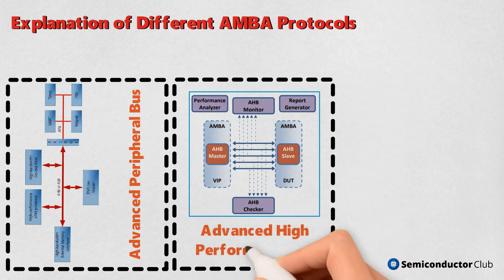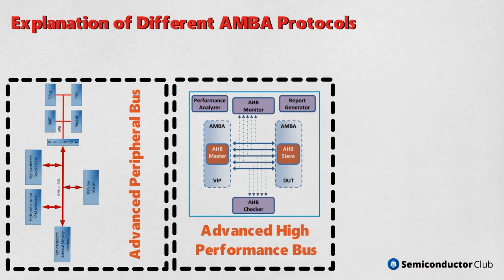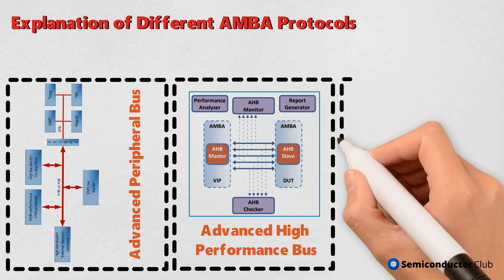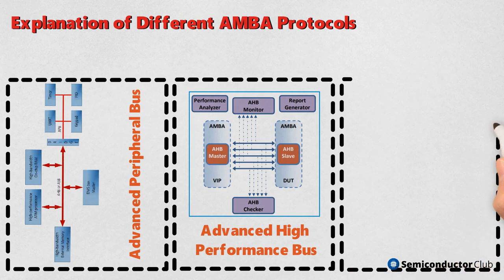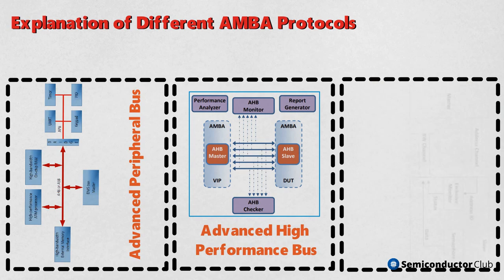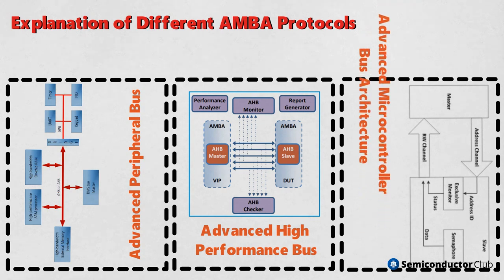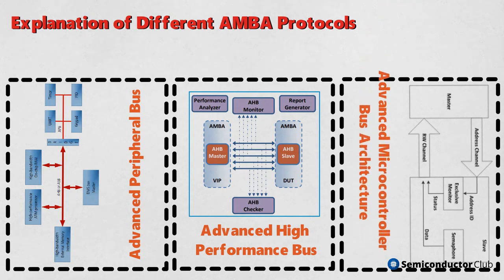AXI V1.0, a burst-based protocol, was first introduced by ARM in the third generation of AMBA. It provides better performance, high-frequency and high-speed operation. There is a separate address and data phase, and it supports data transfers using byte strobes. Burst transactions are possible with only a start address issue, and the ability to give multiple addresses makes AXI highly useful.